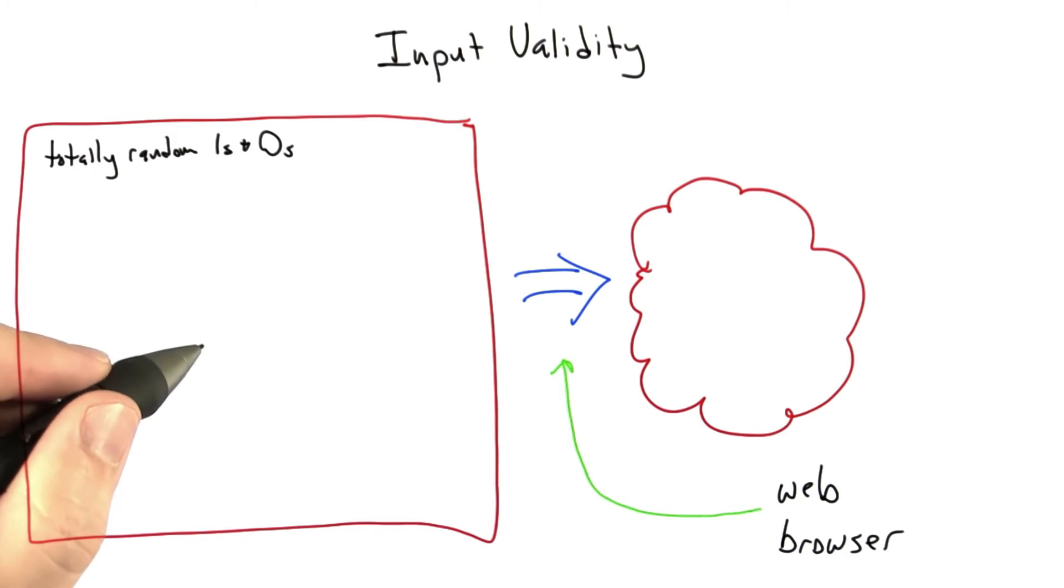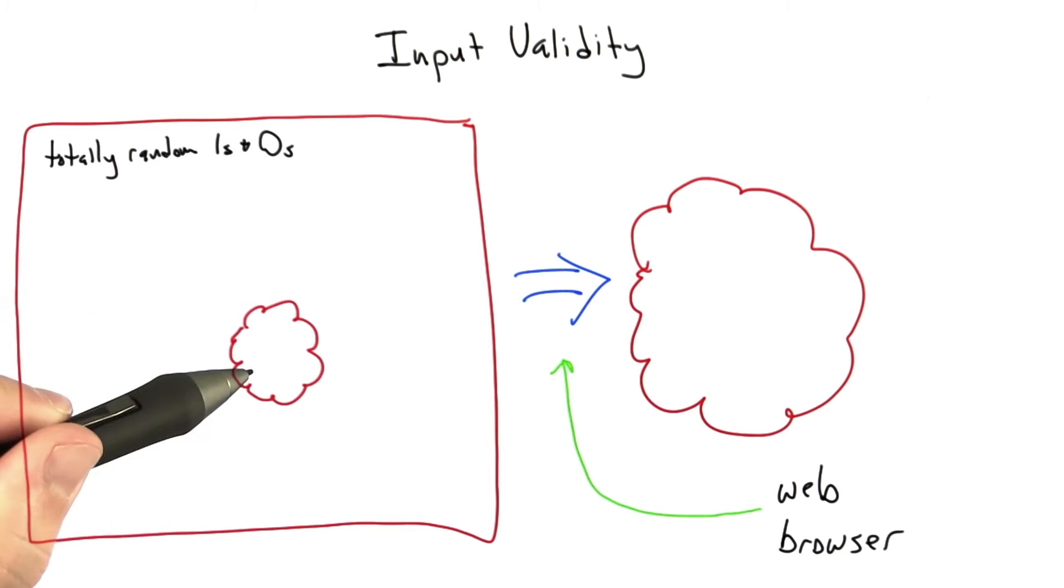Now the web browser wants to render that. So we have totally random ones and zeros. And as you might expect, almost all arbitrary combinations of ones and zeros fail to create valid web pages. There's going to be some small subset of the set of random inputs that constitutes valid input to the web browser.